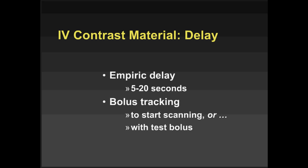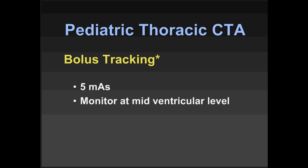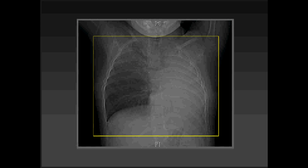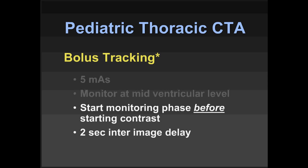You can either use bolus tracking — triggering your scan when you see contrast reach the right or left ventricle — or use a test bolus. On a GE scanner, bolus tracking defaults to a higher MAS for monitoring images; you need to drop that down to 5 MAS to reduce dose. Monitor at the mid-ventricular level. For young children, start monitoring images before giving contrast, using a one to two second inter-image delay — one second for the youngest children, two seconds for older children.